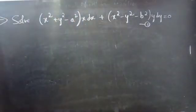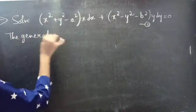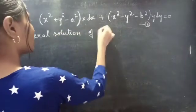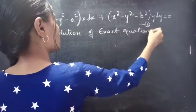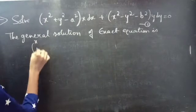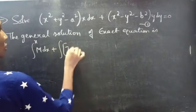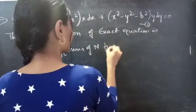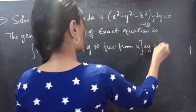So now we need to find the general solution to the given exact equation. We know that the general solution of an exact equation is given by: the integral over x of M dx, plus the integral of terms of N free from x, times dy, equals a constant.